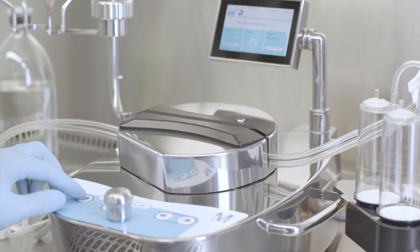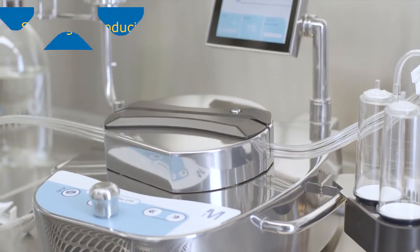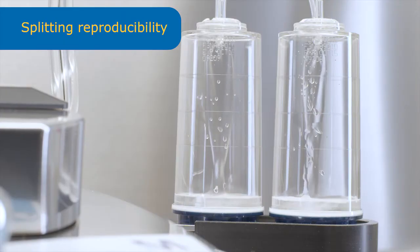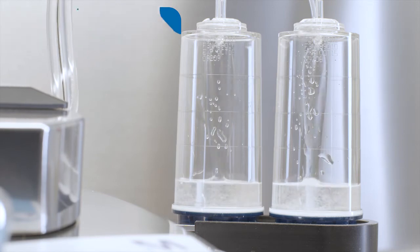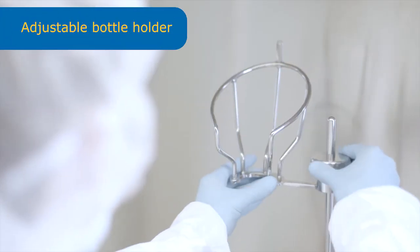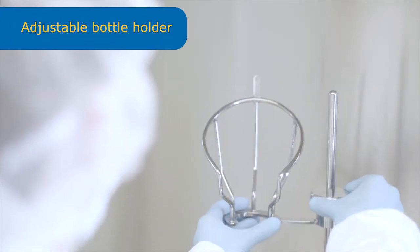The automatic closure eliminates the risk of glove pinching and ensures reliable splitting of the liquid sample. You can also adjust the height and angular position of up to two liter bottles.